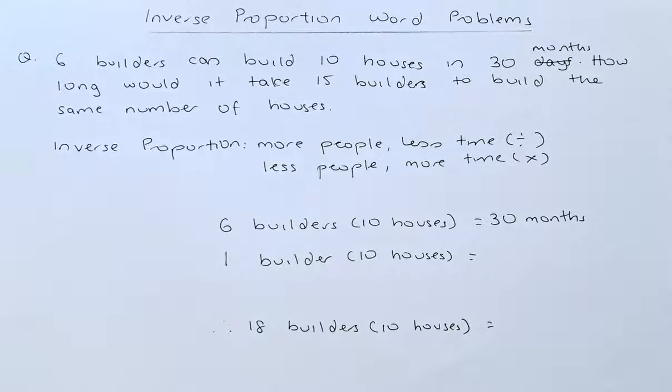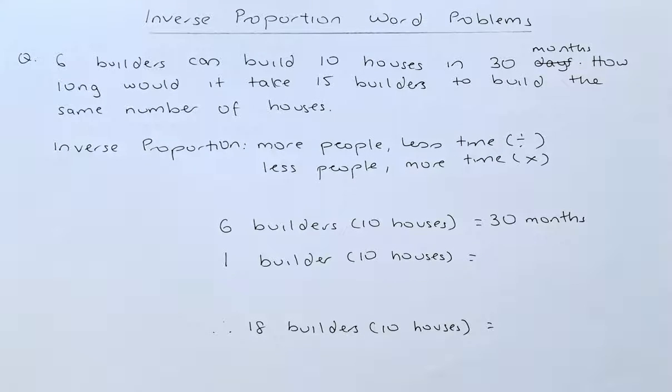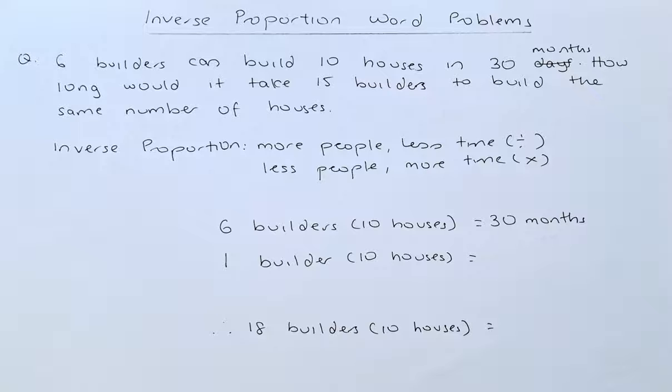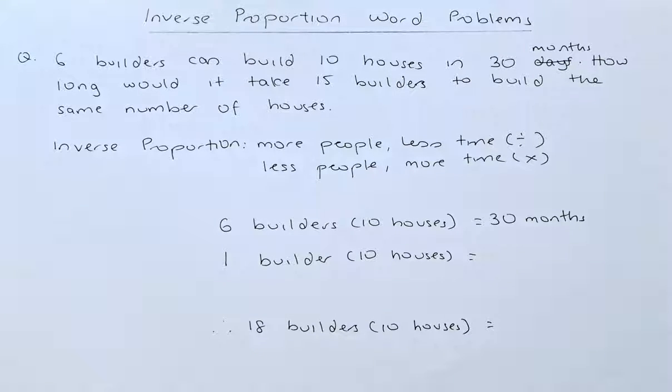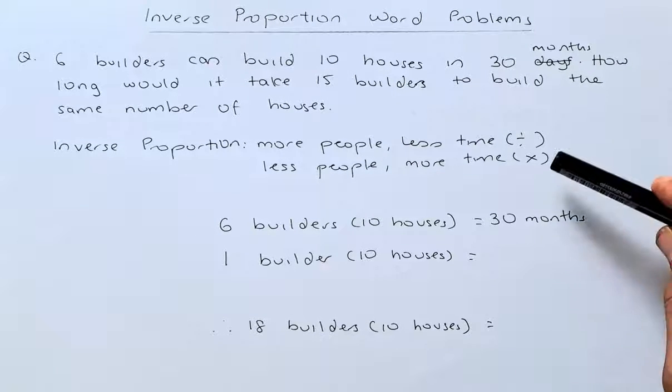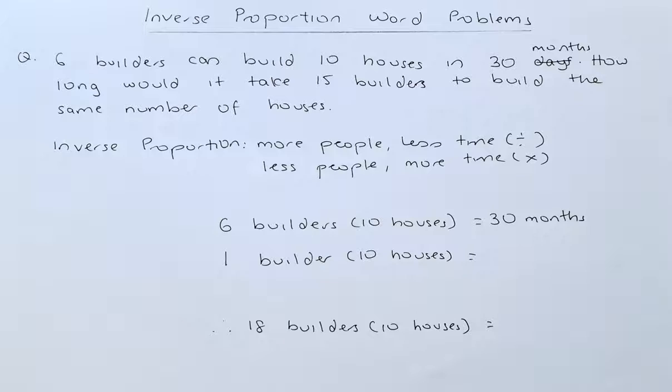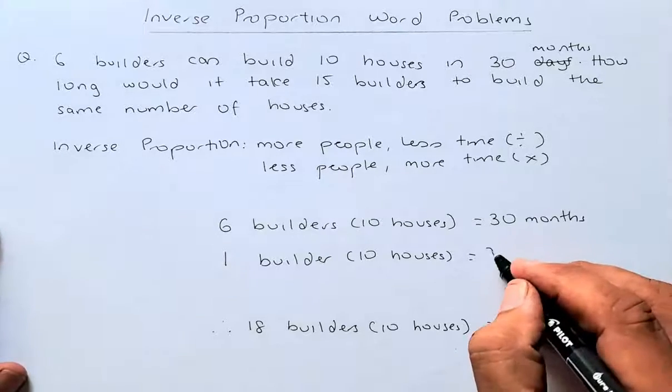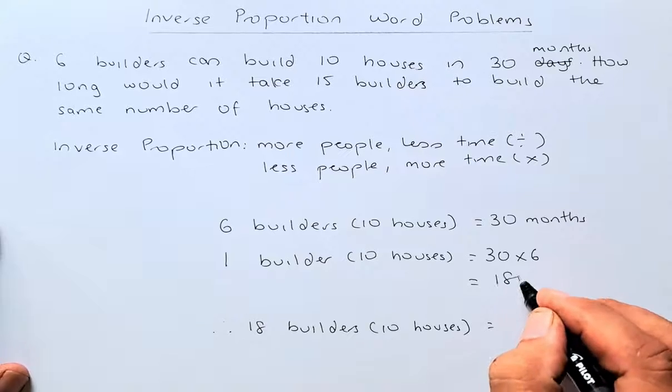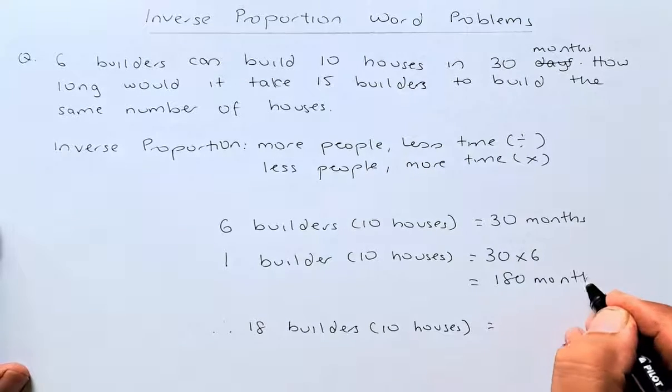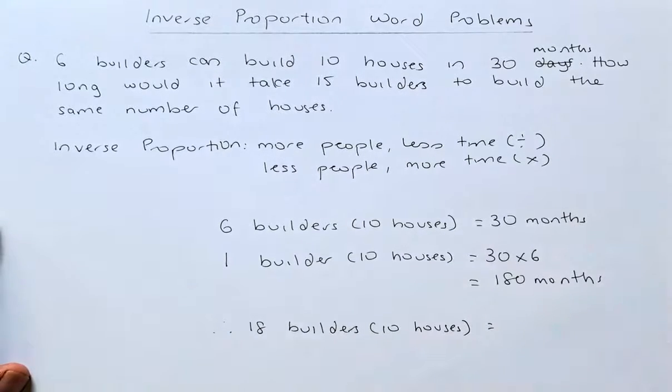So we are given this scenario, 6 builders can build 10 houses in 30 months. So 1 builder means the number of builders, the number of men will be less. So from 6 to 1, 1 builder. So when it is less, you are going to multiply. So when you multiply, you are going to be 30 multiplied by 6 and that will give you 180 months. Got it so far? Great!